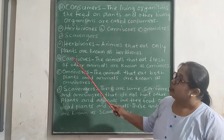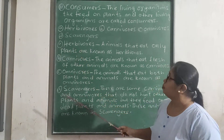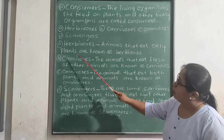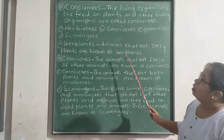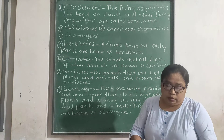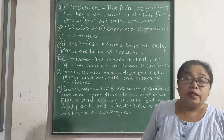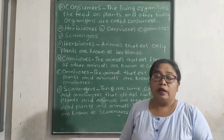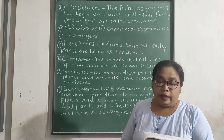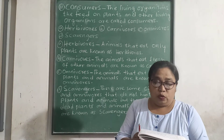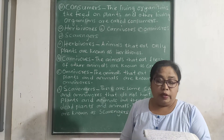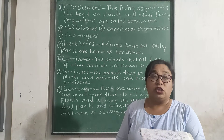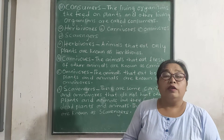Let us discuss herbivores. Animals that eat only plants are known as herbivores. For example, deer, buffalo, goat, zebra, cow, etc. They eat parts of plants like leaves, roots, fruits, and grass. For this reason, herbivores have very sharp and strong teeth to chew their food.